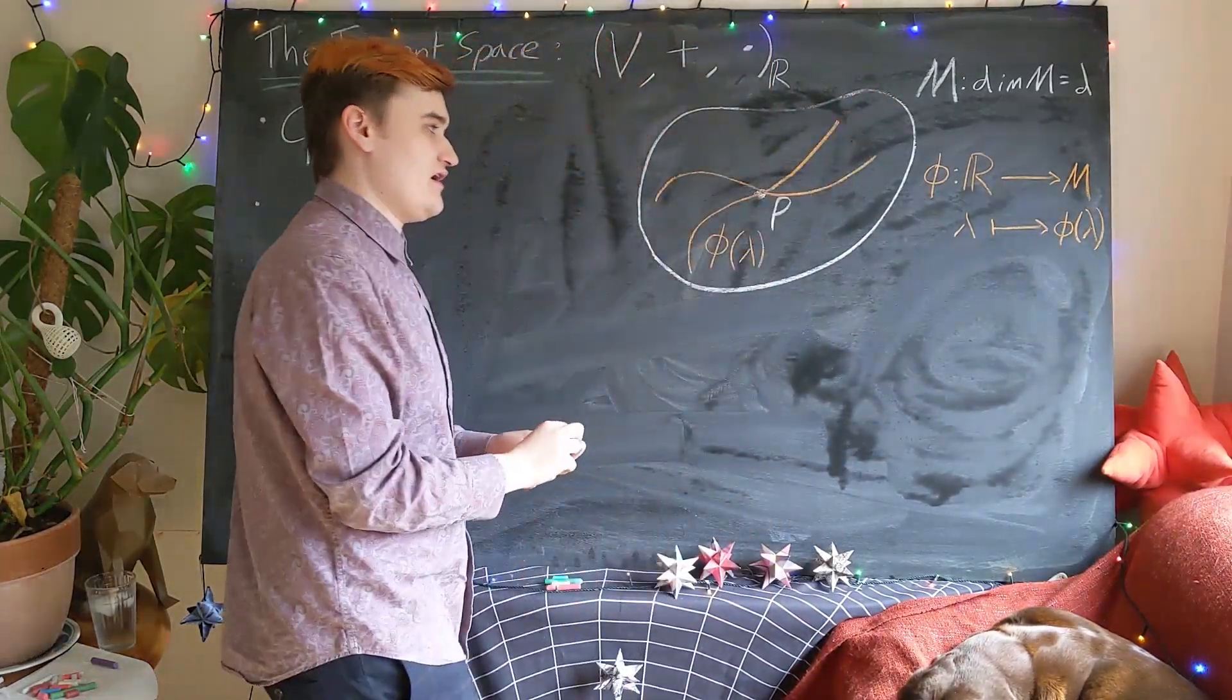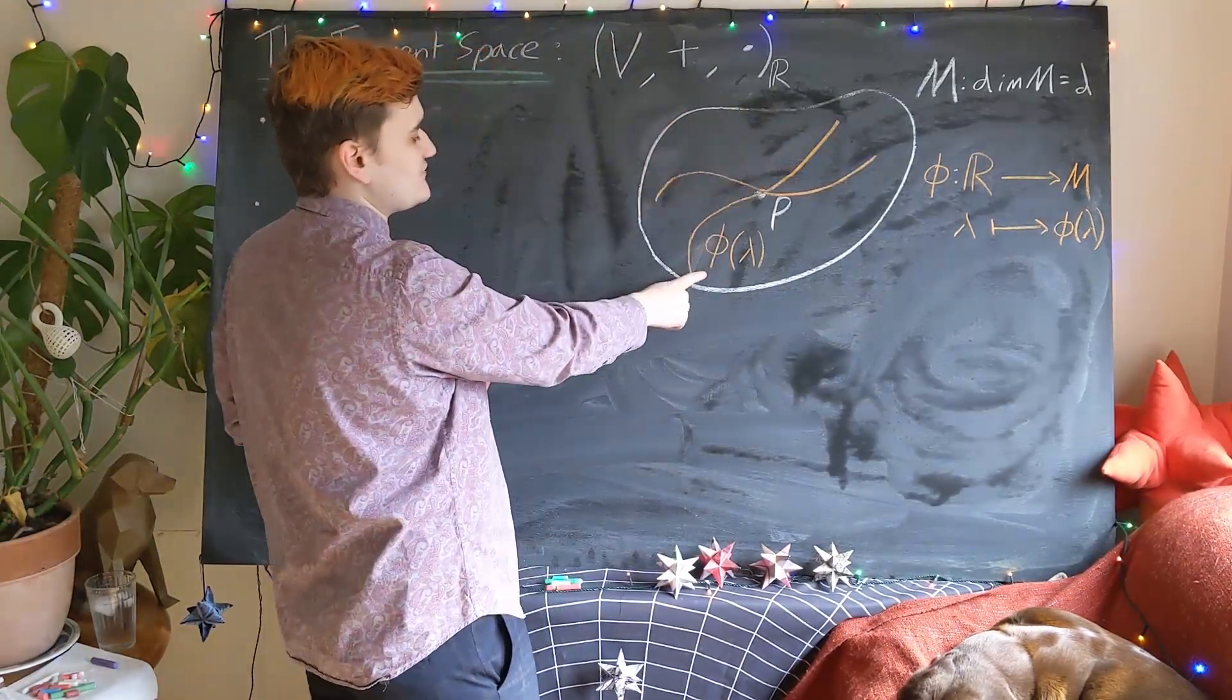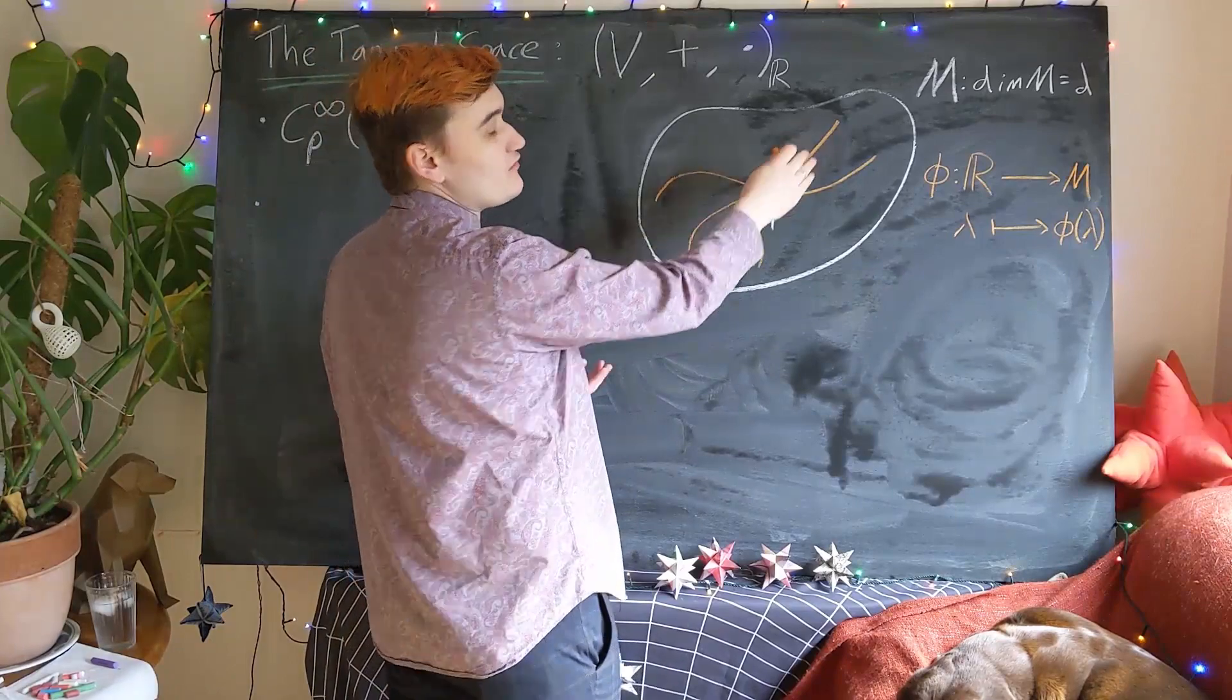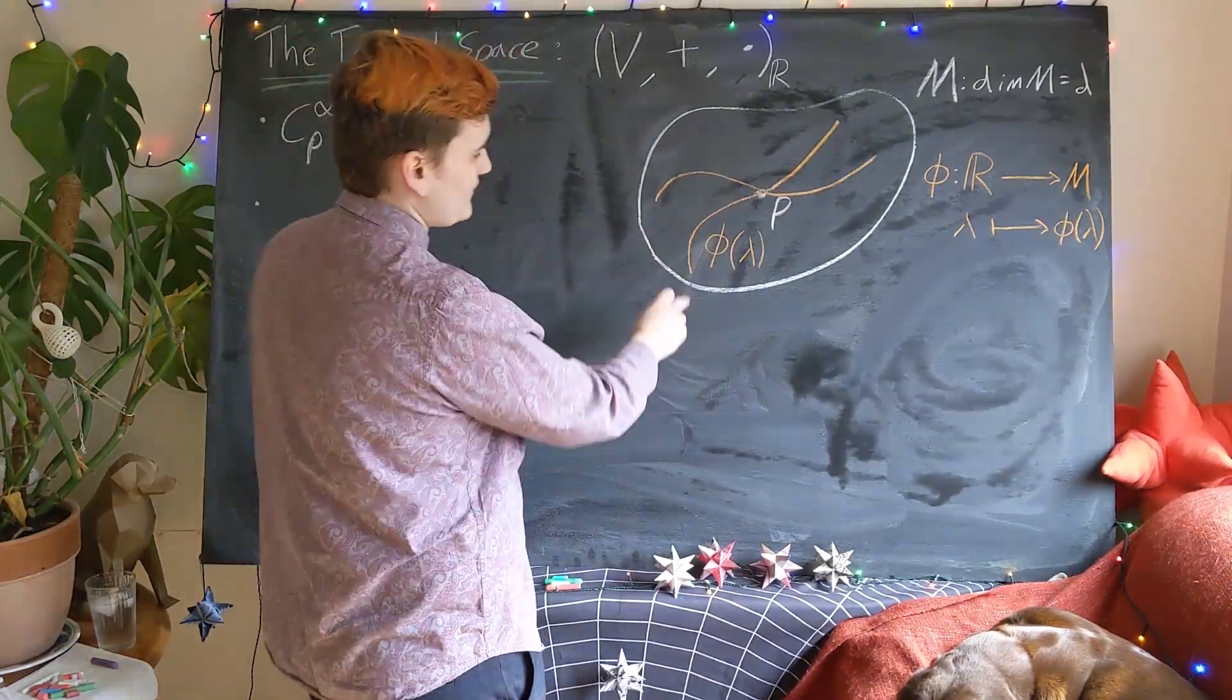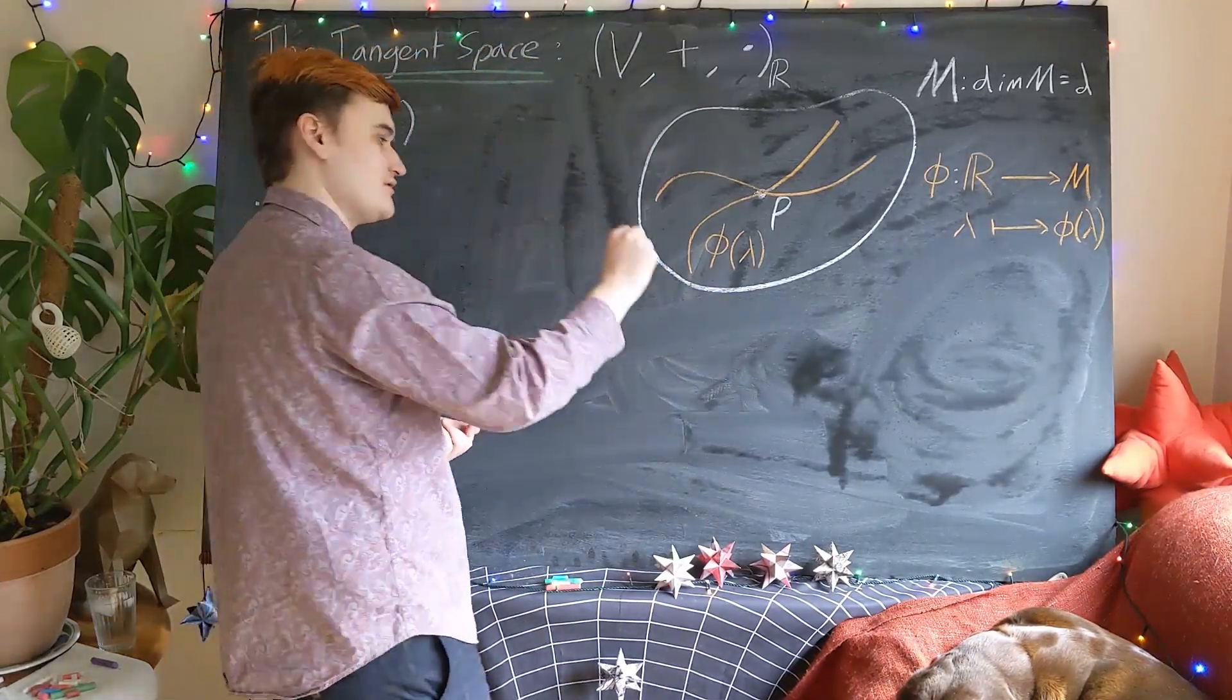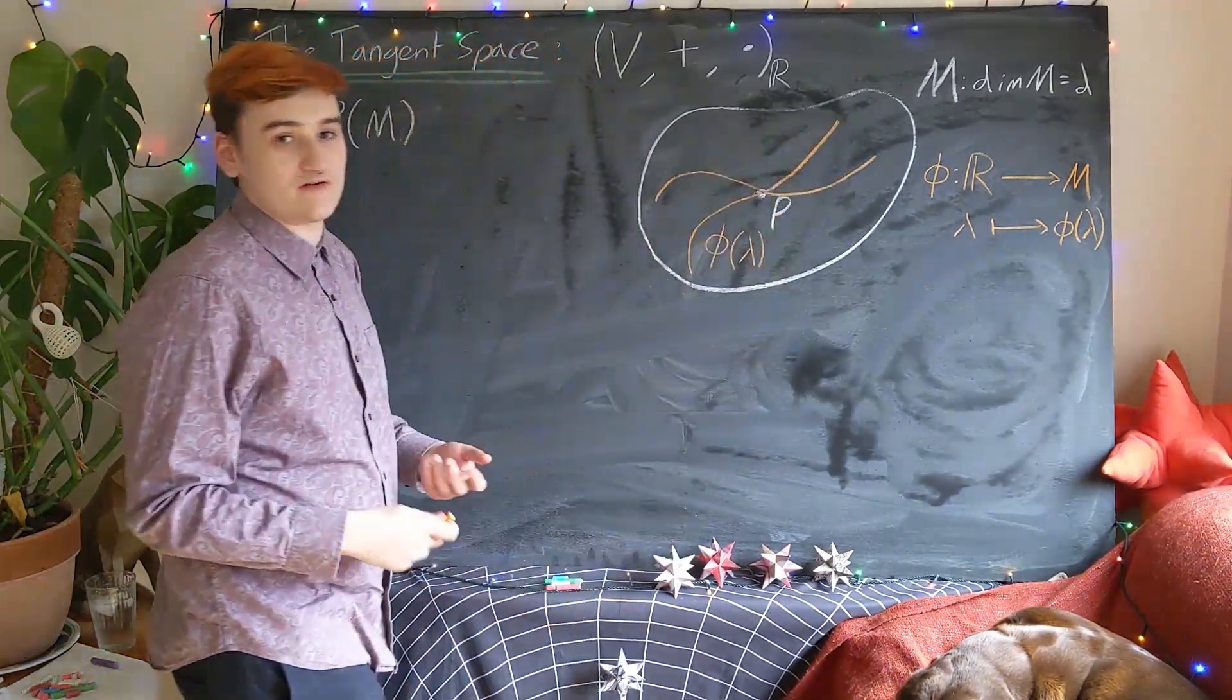So you should think of these orange lines as these curves, these phi lambdas. They're just one dimensional subsets of our big set of points, the manifold. And this phi lambda is just kind of picking out a one dimensional trajectory through the manifold. And that's a curve.